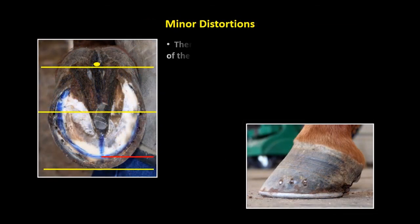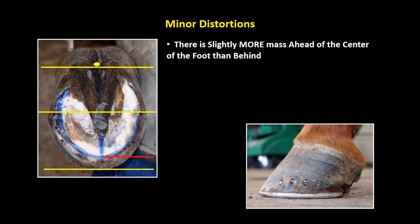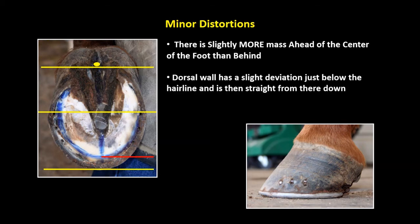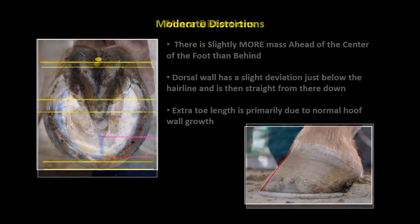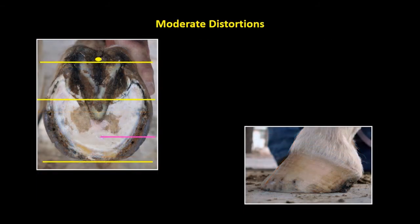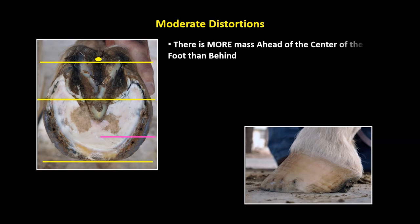Minor distortions: There is slightly more mass ahead of the center of the foot than behind. The dorsal wall has a slight deviation just below the hairline and is then straight from there down. Extra toe length is primarily due to normal hoof wall growth.